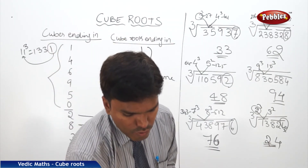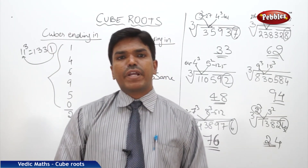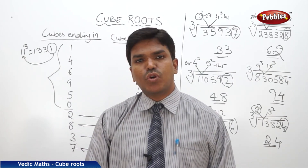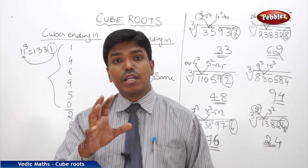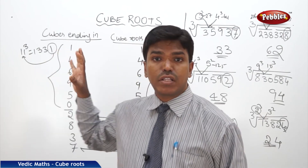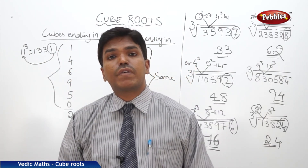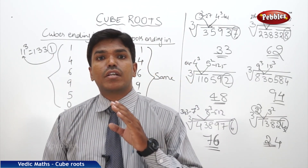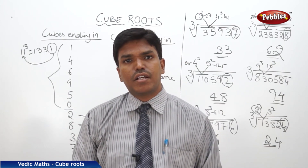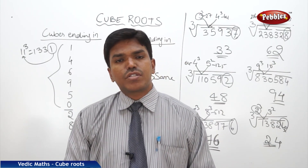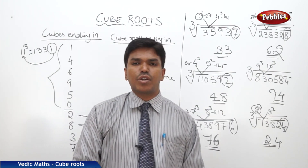So like this, we can easily solve cube roots. The conditions are: you should be thorough with the digit-ending table on the board, thorough with squares until 30, and cubes until 10. With that preparation, calculating cube roots becomes straightforward.